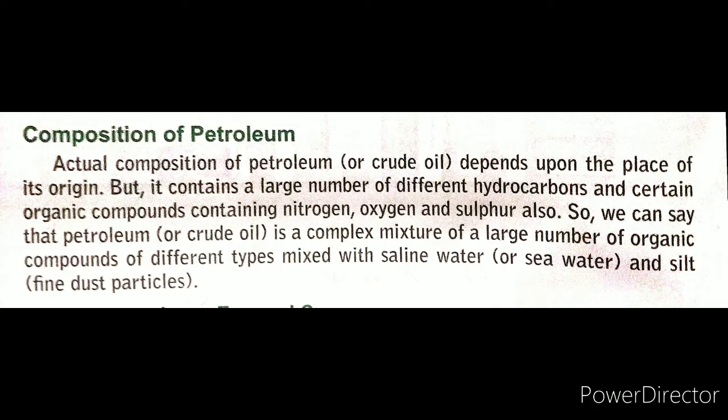Let's understand the composition of petroleum. Petroleum contains a large number of different hydrocarbons, and some organic compounds also have nitrogen, oxygen, and sulfur. So we can say that petroleum is a complex mixture of a large number of organic compounds, mixed with saline water — meaning sea water — and silt, which are dust particles.